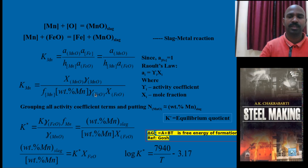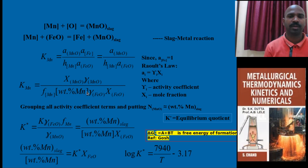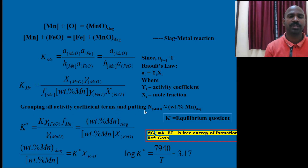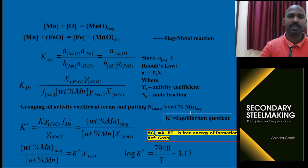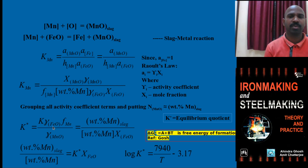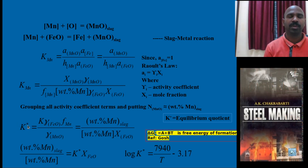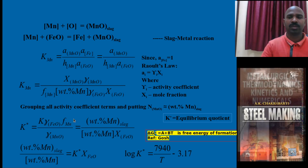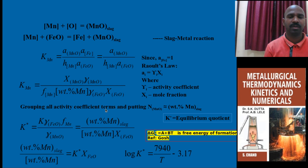Grouping the Raoult's activity coefficient and Henry's activity coefficient together, it is assumed that the mole fraction of MnO equals the Raoult's law value and Henry's law value at equilibrium temperature. You can then rewrite and simplify this case, removing terms and retaining a new equilibrium constant K-star. You can rearrange accordingly. More explanation is available in Ahindra Ghosh's textbook.